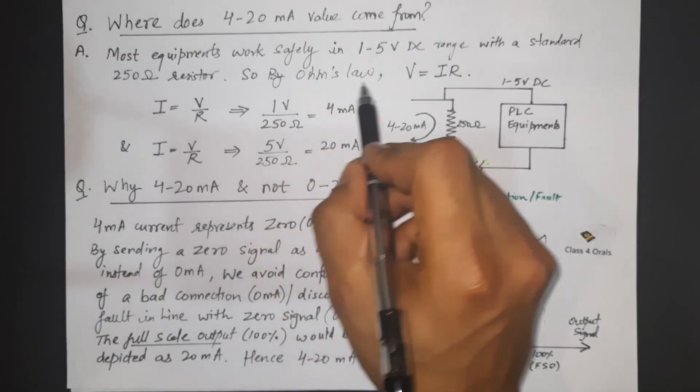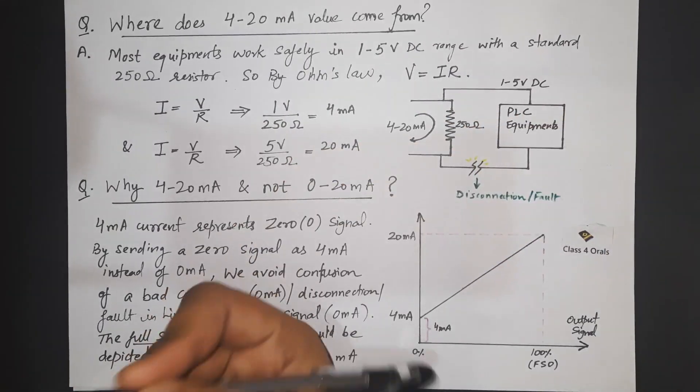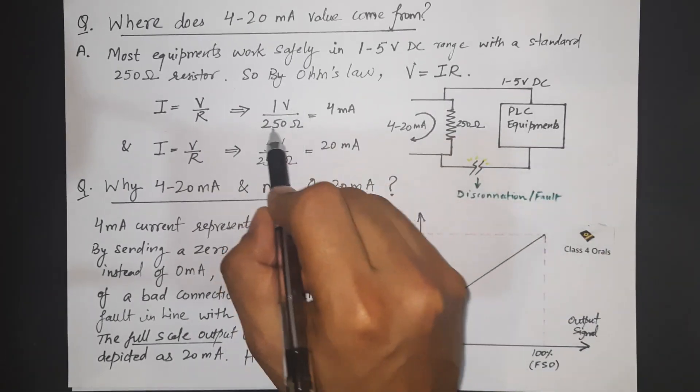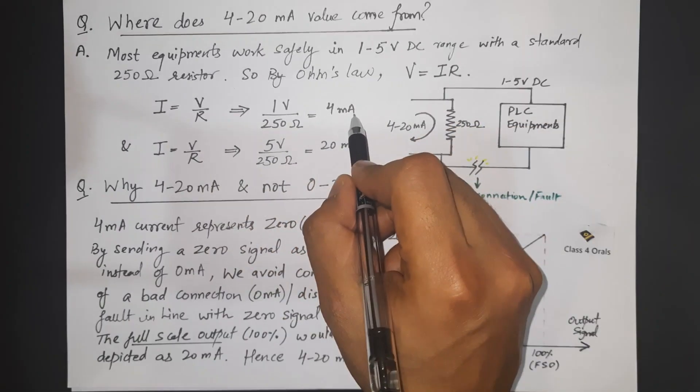Hence, by Ohm's law as you know V is equal to IR thereby I is equal to V by R. So calculating 1 V by 250 ohms that comes out to be 4 mA.